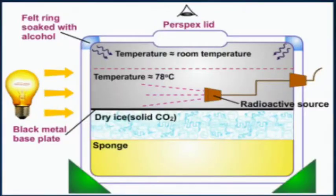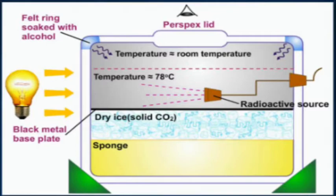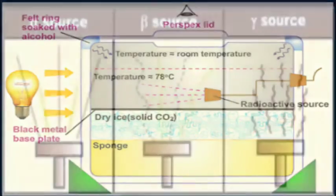Next is the cloud chamber. Inside the cloud chamber, droplets of vapor form around the ions produced by the passage of radioactive particles, so their tracks can be seen. The chamber has a felt ring soaked in alcohol at approximately room temperature, a black metal base plate, a radioactive source, and dry ice — solid carbon dioxide — at the bottom creating a cold temperature. When radiation enters, it ionizes the air and streaks of cloud are seen as a result.